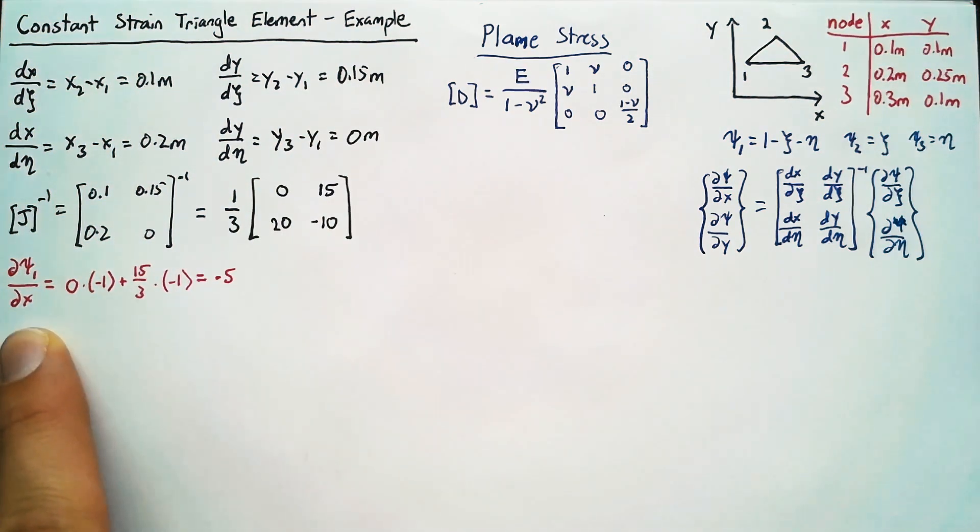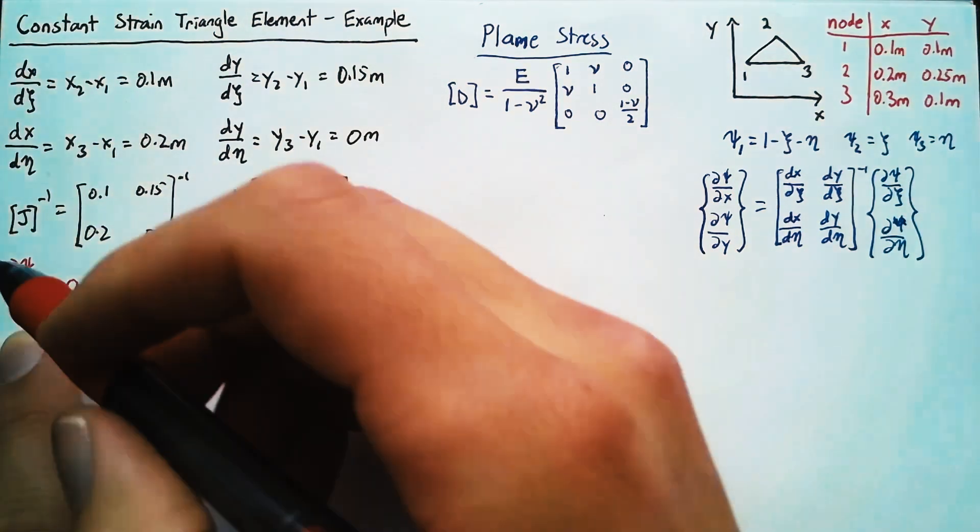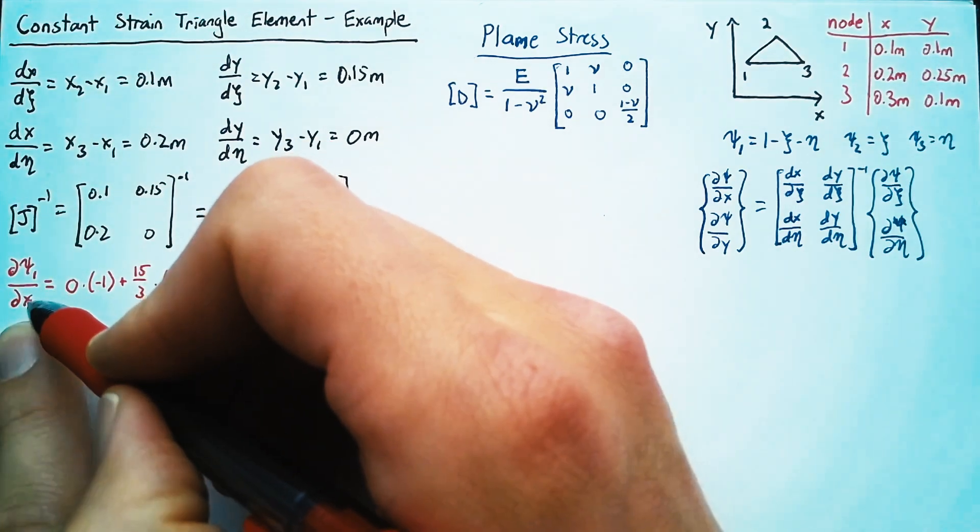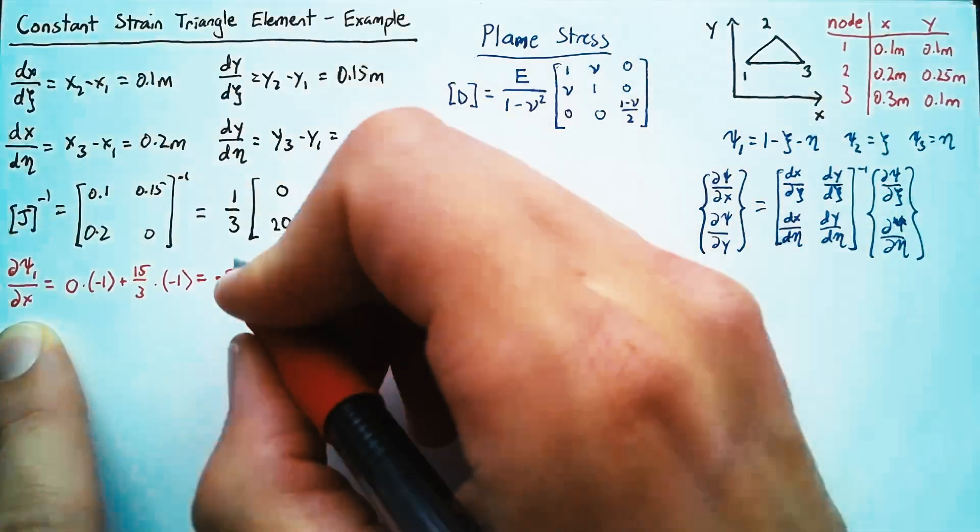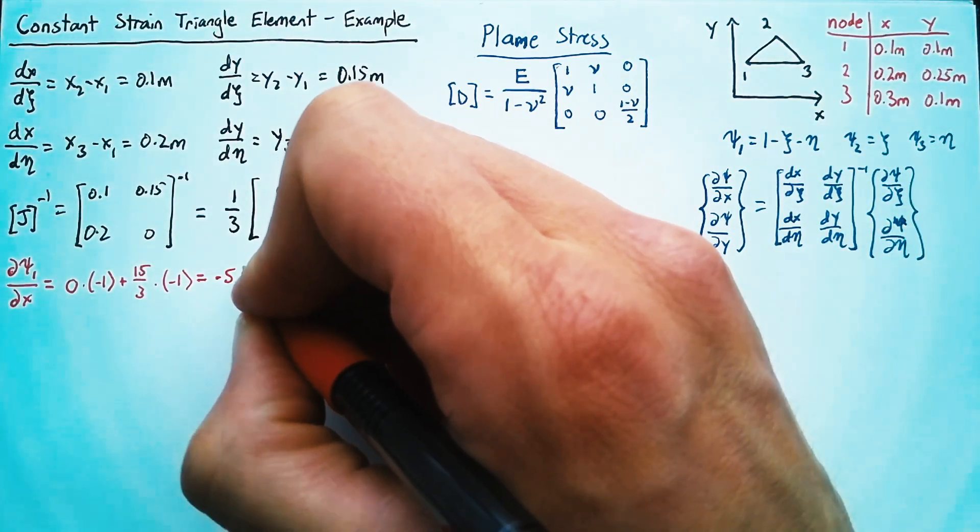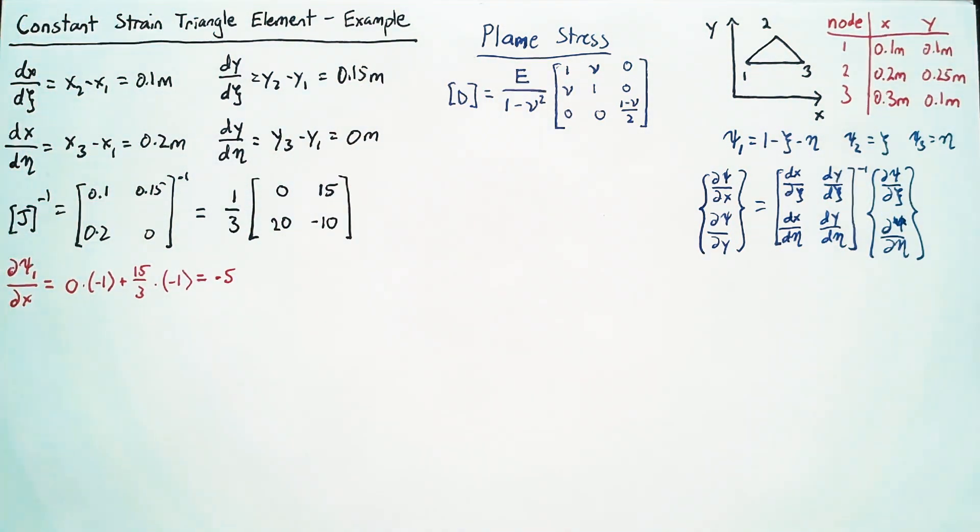Now the units here, just to be clear, psi is unitless and x has units of meters in this case. And so this is actually times meters to the negative one. But I'm not going to write that out for all of these.